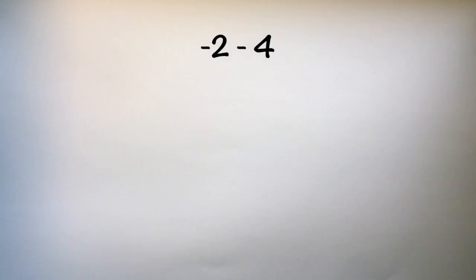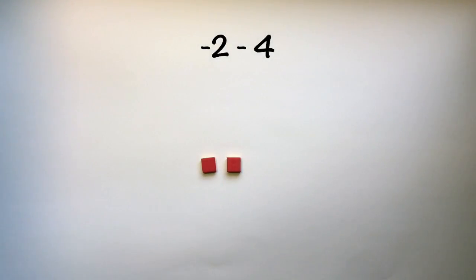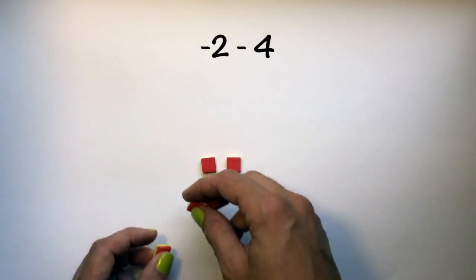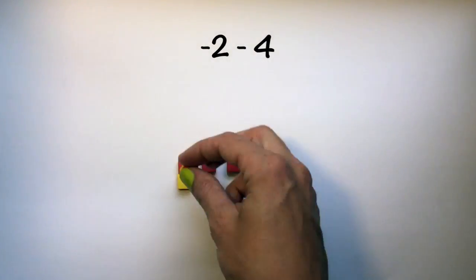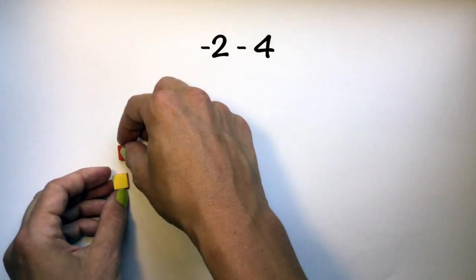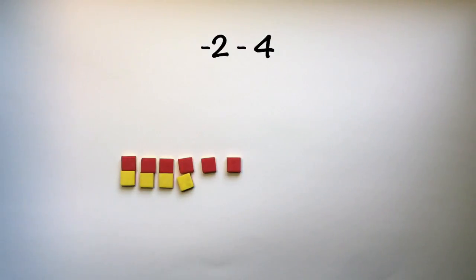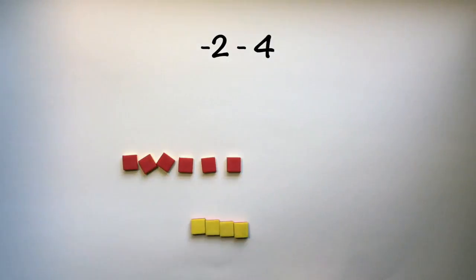The last subtraction problem you tried was negative 2 minus 4. Using our zero pair method we display negative 2. We don't have any positive integer tiles in order to be able to remove 4 positive integer tiles, so we have to add in some zero pairs. Remember, I am not changing the amount represented with my tiles by adding zero pairs, since these are all zero — we still only have negative 2. Now that I have added 4 zero pairs I am able to subtract positive 4, and I am left with negative 6.